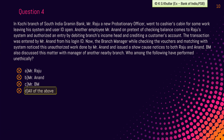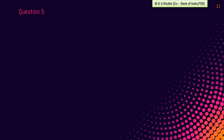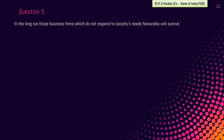Friends, hope the case study is clear. If you have any doubts, feel free to ask in the comments. Next question: in the long run, those business firms which do not respond to society's needs favorably will survive. The above statement is: option A — correct; option B — incorrect; option C — can't say. The correct answer is option B, that is, this statement is incorrect. The fact is society gives business its license to exist, and this can be amended or revoked at any time if it fails to live up to the expectations of society.